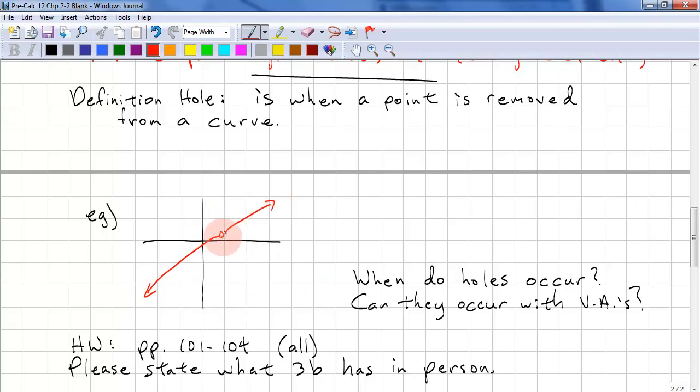It has to be a point removed from a curve. You'll want to figure out when do holes occur, and can they occur when there's a vertical asymptote?